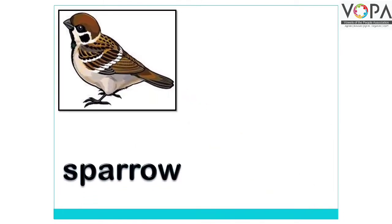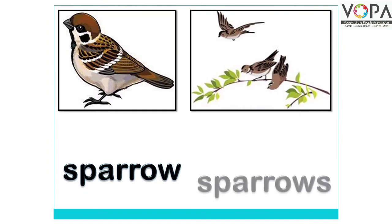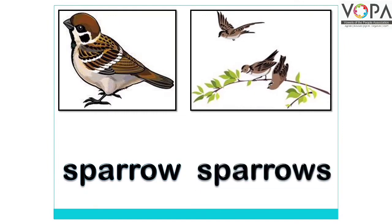Sparrow... sparrows। प्यारे बच्चों, आप गौर कर रहे होंगे कि जो एक चीज है उन अलफाज के आगे और जो एक से जादा है — जो many है — उसके आगे दोनों अलफाज सेम हैं, लेकिन सिर्फ s का फर्क है। इससे हमें समझ में आता है कि जो many things हैं, जो एक से जादा things हैं, अगर उनके आगे s लगा दें, तो वो जमा बन जाती है — वो एक से जादा बन जाती है।